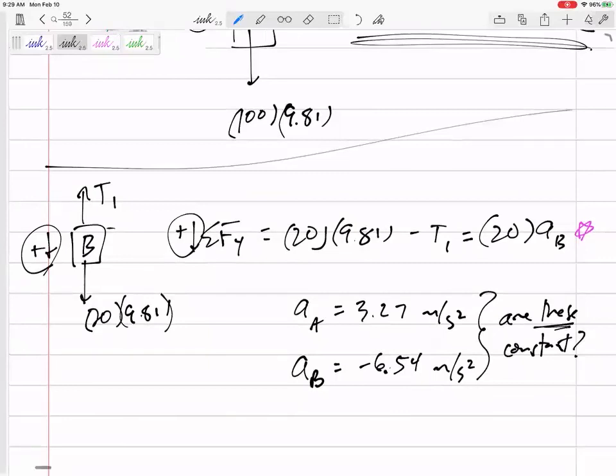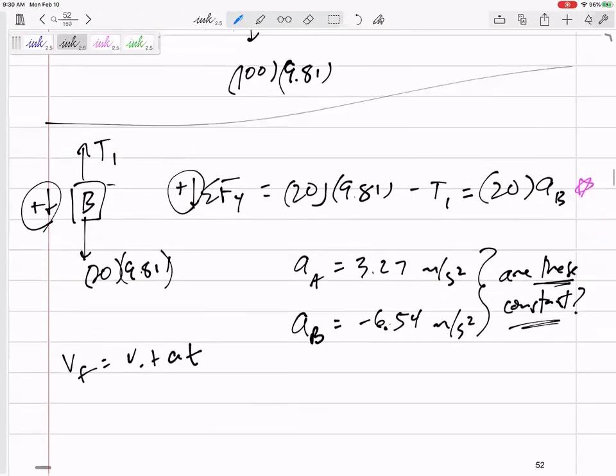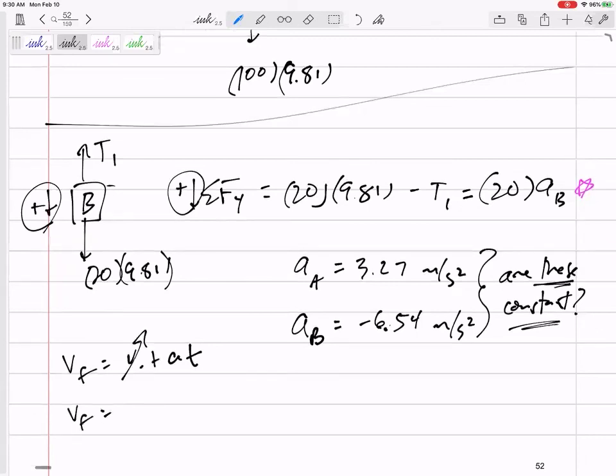These are constant so it says determine the velocity we could use a constant acceleration equation to find the velocity of block B after two seconds. Right if it started from rest after two seconds, v final equals v initial plus aT. Correct, v final, it's v initial so really just acceleration, the velocity of the 20 kilogram block B, 6.54 and the time so whatever that gives us would be the answer to the question.